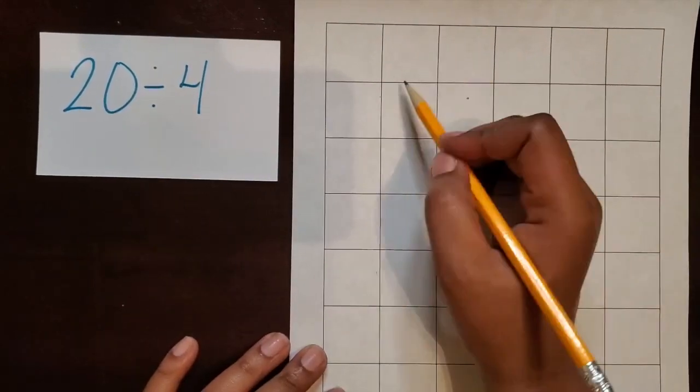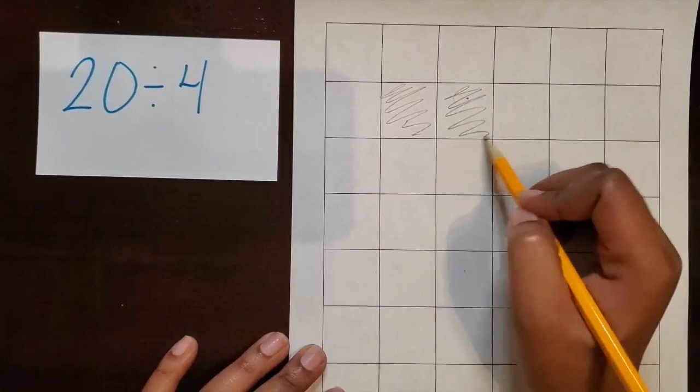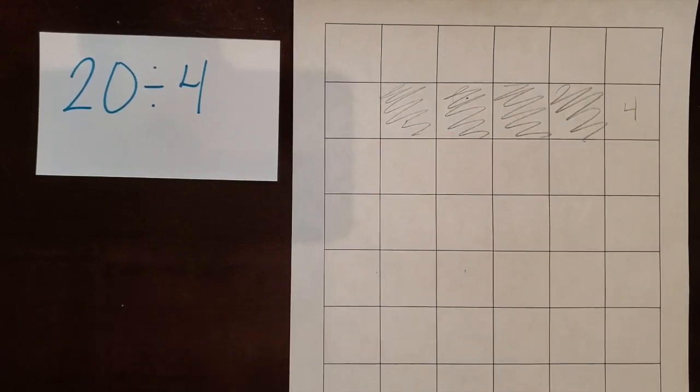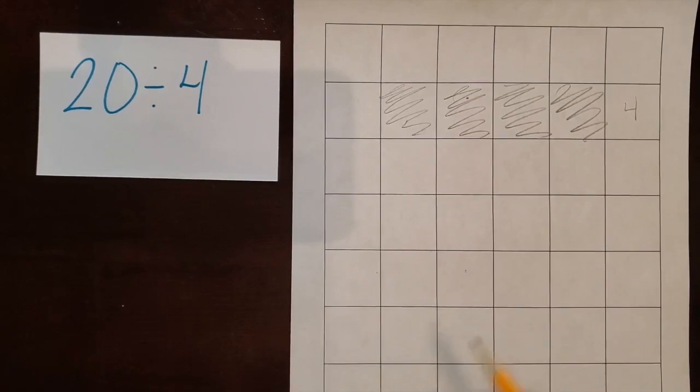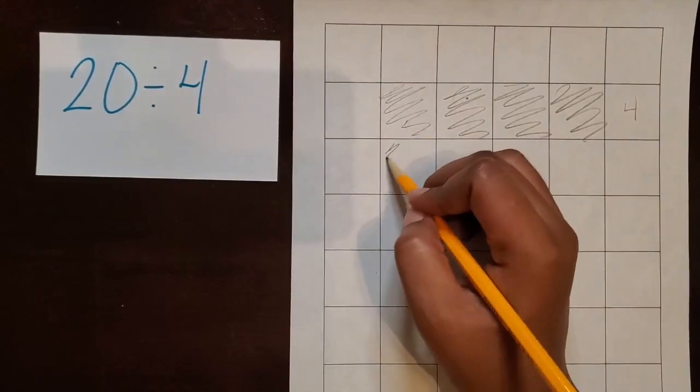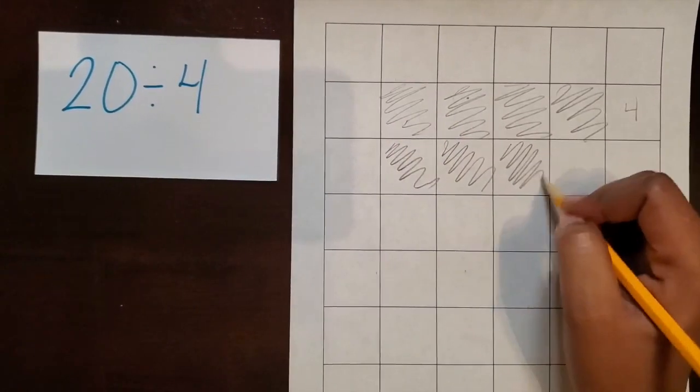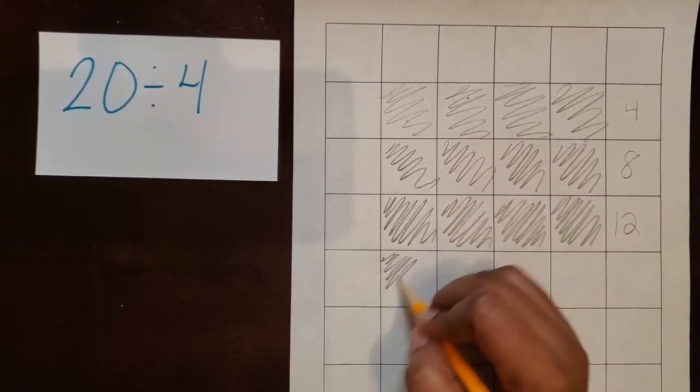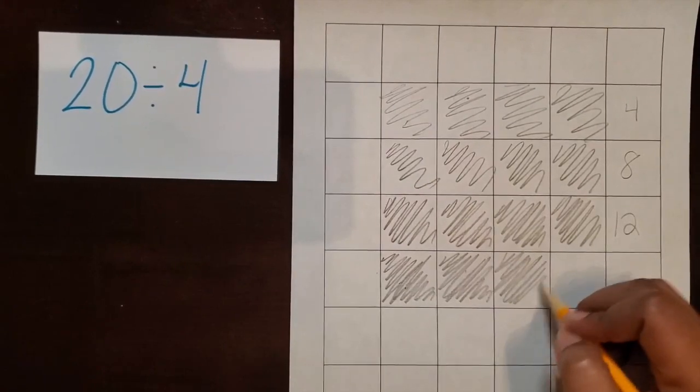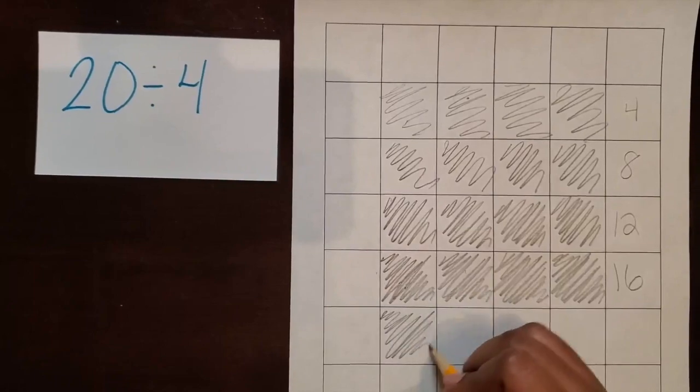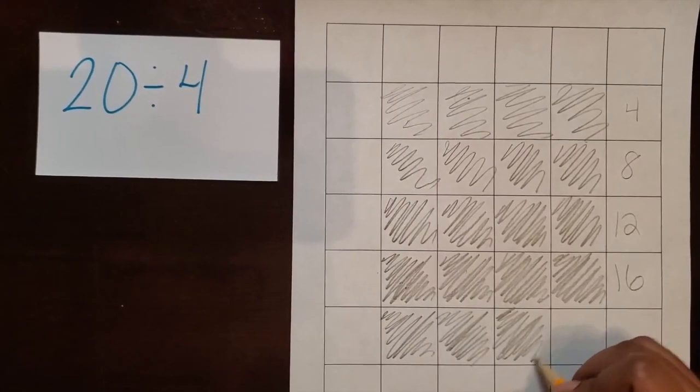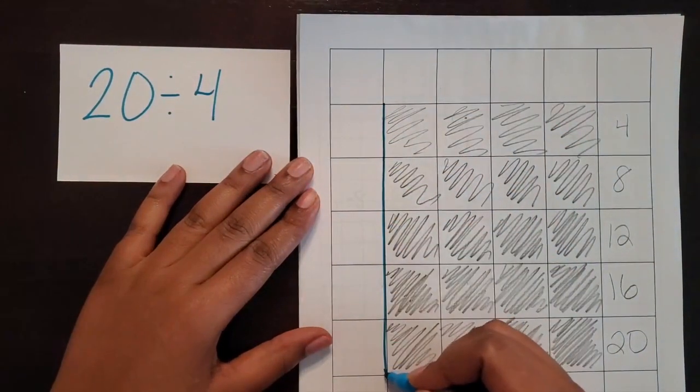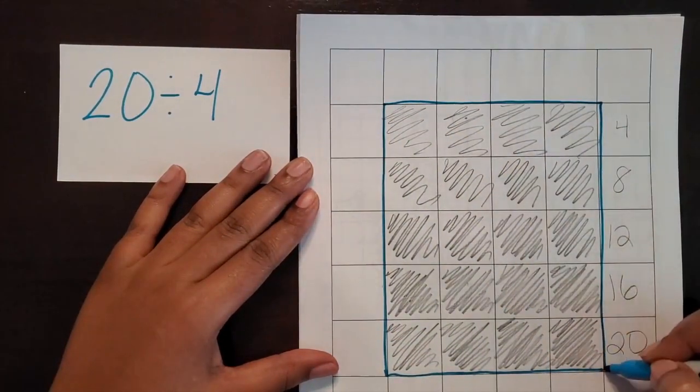So we're going to do 4 going across. I'm going to add a label just to help me count. I want my students to keep count as they're going along with their model. So I'm going to add another row of 4 until I get to 20.